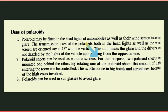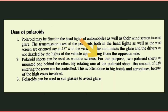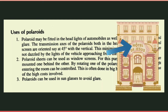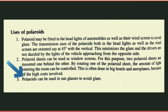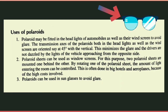Number two — polarite sheets can be used as window screens. For this purpose two polarite sheets are mounted one behind the other; by rotating one of the polarite sheets, the amount of light entering the room can be controlled. This is often done in big hotels and aeroplanes. Number three — polarites can be used in sunglasses to avoid glare from strong sunlight.